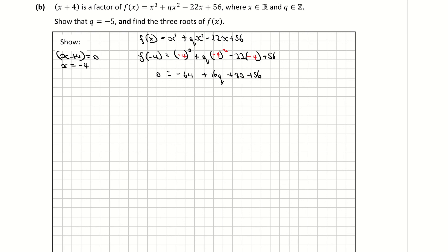So minus 64 plus 80 plus 56 gives me 16q plus 80 is equal to 0. Subtracting 80 from both sides gives 16q is equal to negative 80. Dividing across by 16, q is equal to minus 80 divided by 16, so q is equal to negative 5.